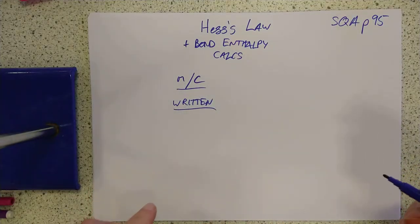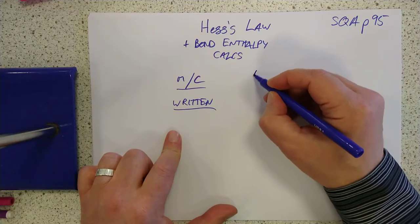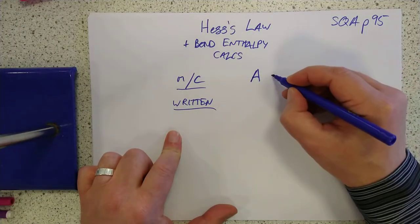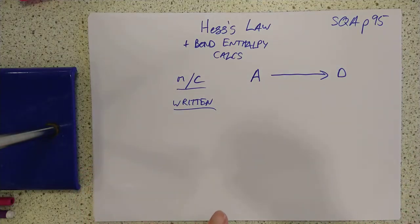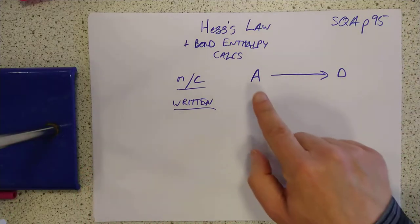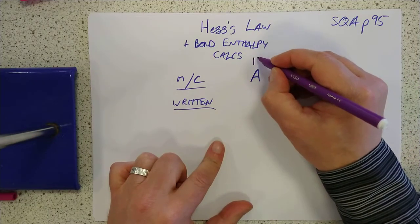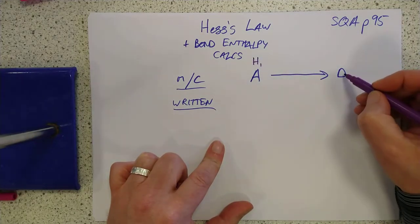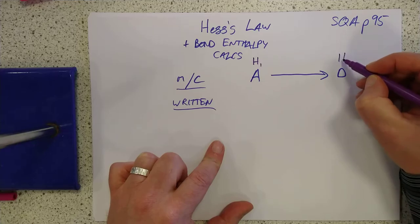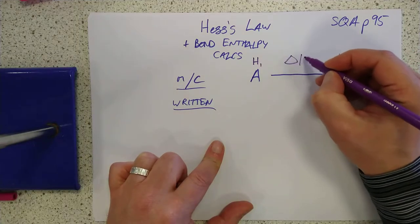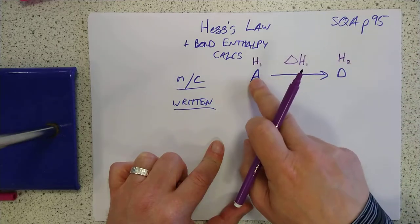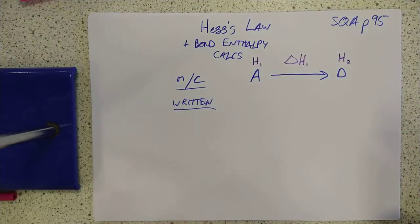What does Hess's Law say, first of all? Well, Hess's Law says that if you start with chemical A and you turn it into chemical D, for example, there will be a certain selection of bonds here, and they will have an enthalpy value stored in them, H1. These, your product, will have a different set of bonds and a different enthalpy, and that, of course, is why you have delta H, a change in enthalpy as you change from here to here.